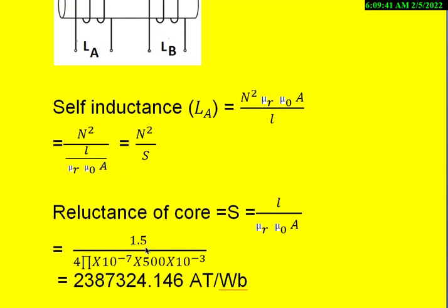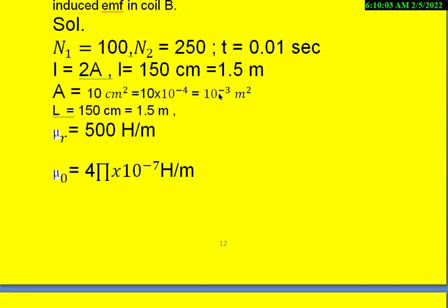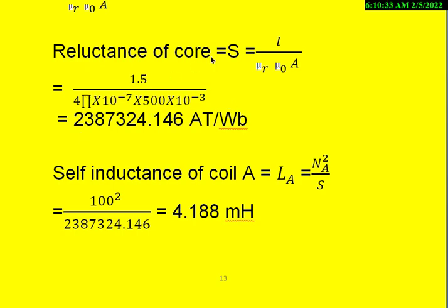So once we write the reluctance of the core, we can calculate like this. L is given as 1.5 meters, so divided by mu R is given as 500 and mu 0 is nothing but 4 pi into 10 power minus 7. And the area is given as 10 centimeter square means converted to meter square means we get here 10 power minus 3 meter square. L is 150 centimeter means the magnetic path length is 1.5 meters. And mu R is of 500. So once we substitute all the values here, then we get what is called the reluctance of the core. So we get 2,387,324.146 ampere turns per weber.